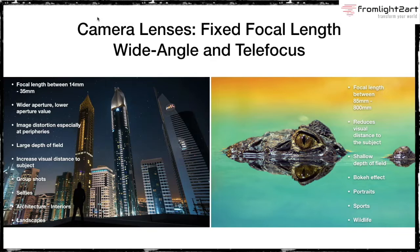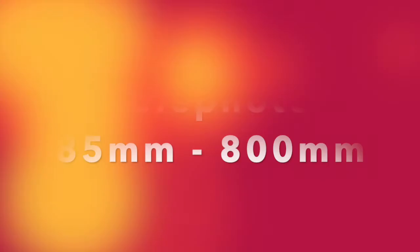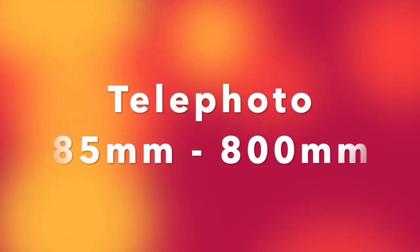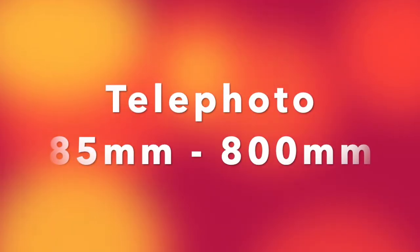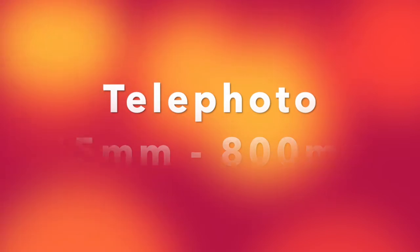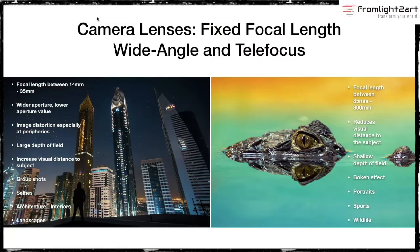If you look at the telephoto lens on the right side, you're going to have magnification because of your focal length. The focal length between 85 to 800 millimeters are all considered to be types of telephoto lenses — that's a big range. This will allow you to visibly reduce the distance to the subject, and it'll give you a shallow depth of field, creating a bokeh effect.